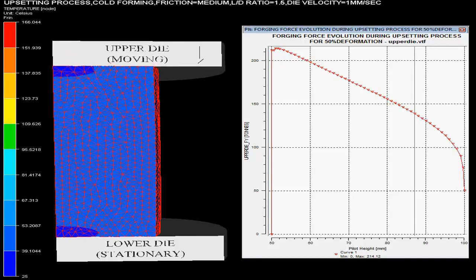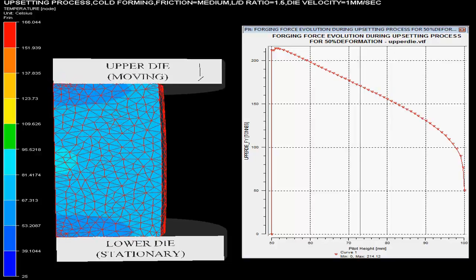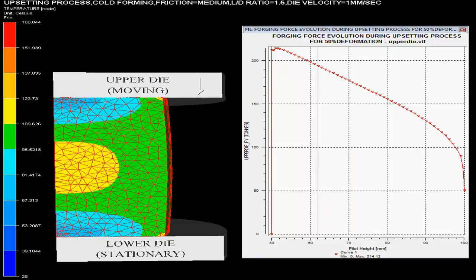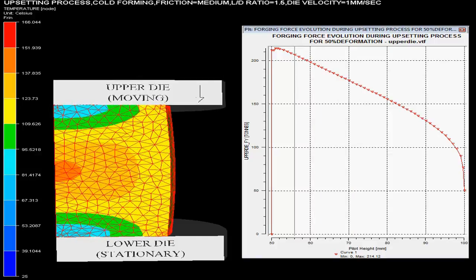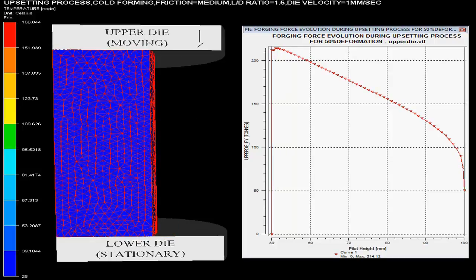One could observe in this simulation that only one fourth part of the upsetting process is shown here. This is because upsetting process is axisymmetric. Therefore, only one part of the process is simulated for the sake of saving computation time.